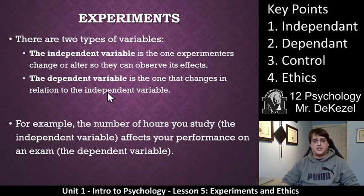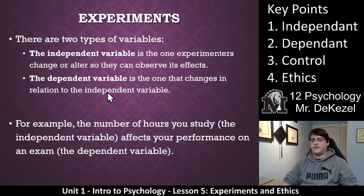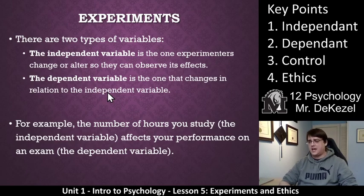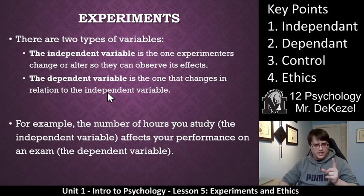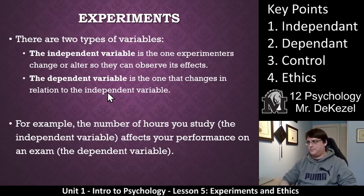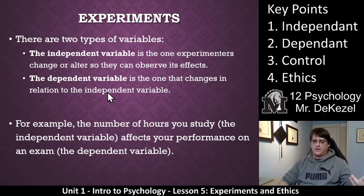The dependent variable is the variable that changes in relation to the independent variable. In the examples of the test where you're given amounts of time or food, it would be the score that changes — that score is dependent on the independent variable. You get to decide what the independent variable is, and then the dependent variable changes on its own. For example, the number of hours you study is the independent variable; you choose how many hours you study, and it affects your exam performance, which is the dependent variable.